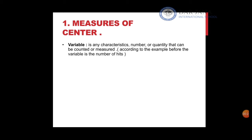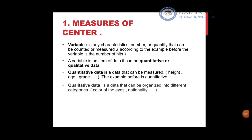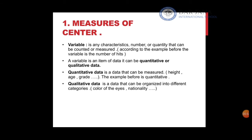We'll start with the definition of a variable: it is any characteristic, number, or quantity that can be counted or measured. A variable could be quantitative or qualitative. Quantitative data can be associated with a quantity and measured, such as height — he's 160 centimeters — or a grade of 96 out of 100. Qualitative data discusses a quality or trait that cannot be measured, for example the color of one's eyes or nationality.